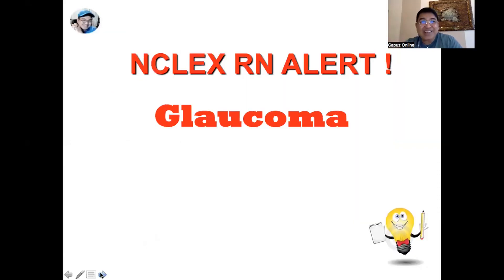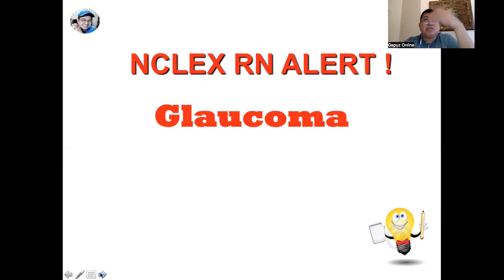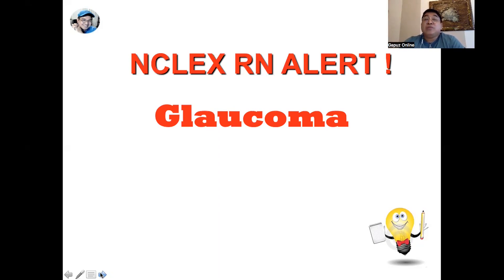Our next concept is glaucoma. Glaucoma is a group of diseases characterized by increased intraocular pressure. The common symptom is blurring of vision; if acute, it comes with eye pain, and eventually tunnel vision develops — it's as if you're looking through a tunnel where all peripheral areas are dark and only the central area is visible. When looking at lights, there are usually rainbow halos around them, and these manifestations help identify the patient's condition as glaucoma.